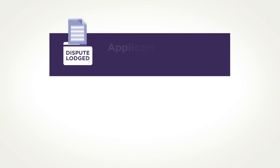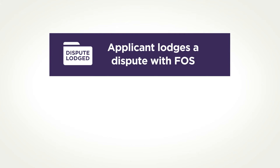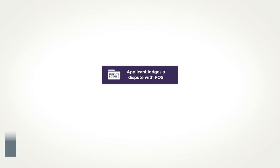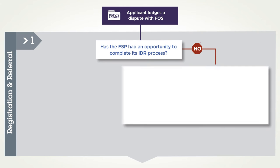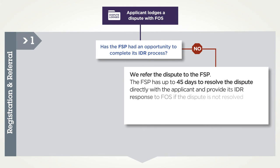An applicant lodges a dispute with FOS. Has the financial services provider had an opportunity to complete its IDR process? If the answer is no, in most cases we will give the FSP up to 45 days to resolve the dispute directly.